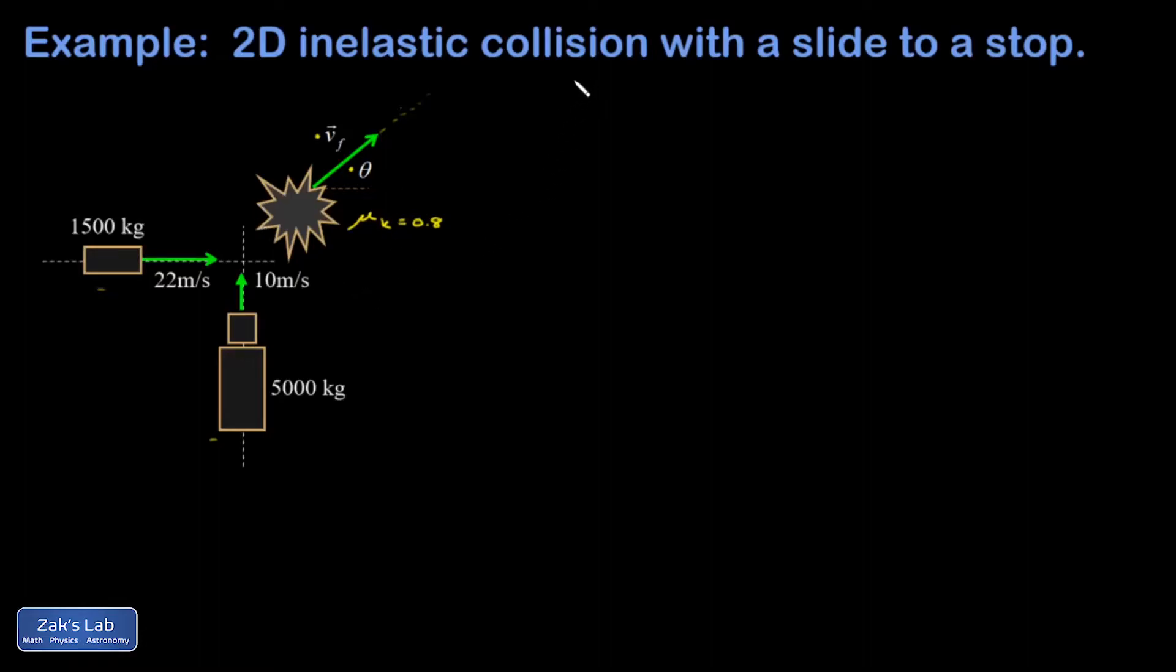So to get this solved, I need to conserve momentum, but it's a two-dimensional problem so I'm going to look at an x momentum equation. My initial x momentum is going to be just the momentum of the car, and my final x momentum is going to be the total mass of the wreckage, which is 6500 kilograms.